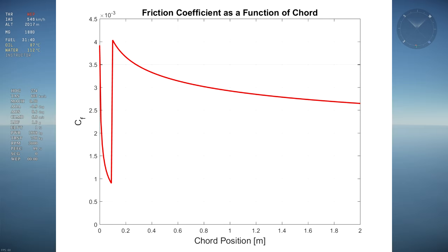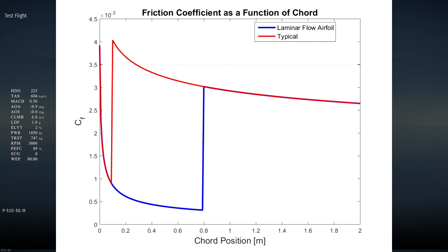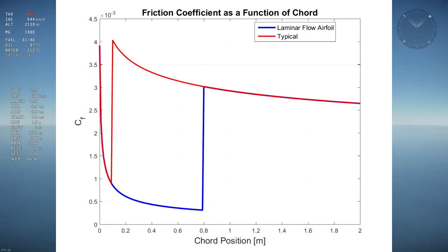We notice the transition from laminar to turbulent flow by the sudden increase in skin friction coefficient at 5% of the chord, which is 0.1m on this graph. Let's plot the same type of graph for the laminar flow airfoil and overlay it to see what we get. We notice that the skin friction is the same for the first 5% of the graph because both are laminar. Then, the typical airfoil sees a big increase in skin friction coefficient, while the laminar airfoil continues to decrease. That's when the typical airfoil transitions to turbulent flow.